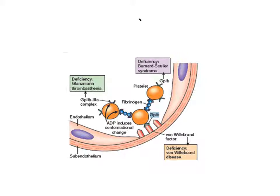All these things — von Willebrand factor, GP1B, fibrinogen, and GP2B3A — are needed for normal adhesion and normal aggregation of platelets. With proper adhesion and aggregation, there will be proper hemostasis. Keeping all these terms in mind will put you in a better position to understand the normal hemostatic process.